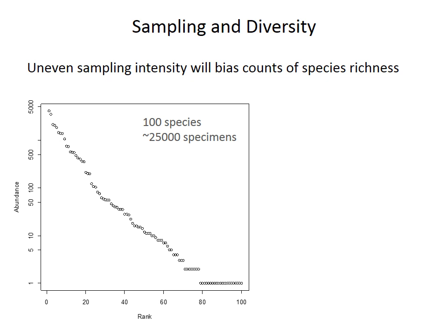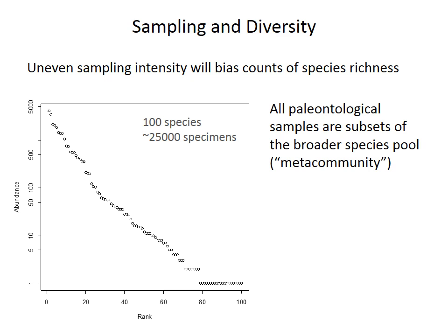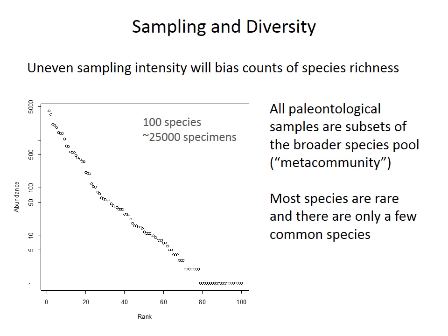The reason is that in a natural community, most species are rare and there are only a few abundant species. The plot here shows the abundance of 100 different species. The species are ranked on the x-axis from most abundant on the left to rare on the right, and the y-axis shows the abundance of each species. The most abundant species has close to 5,000 specimens, but there are more than 20 species in the bottom right with only one specimen. All biological or paleontological samples are subsets of a broader species pool — a meta-community. Most species are rare and only a few are really abundant.